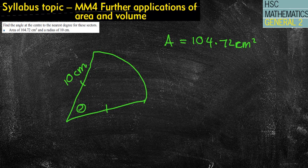So how would I start off? Well, first of all, I'll get my formula sheet out and go, okay, there is a formula for the area of a sector there. That area is θ over 360 times πr².